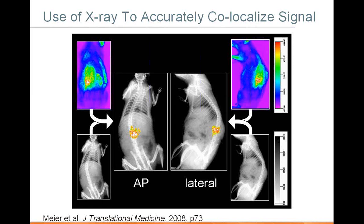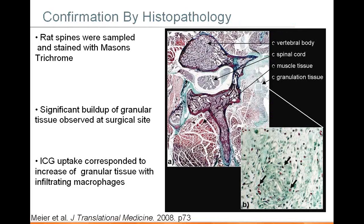Co-registering fluorescence signals with x-ray really helps with landmarking and identifying where your signal is actually coming from. From these images, you can tell that accurately co-registering fluorescence with x-ray signals allows you to see that these signals are coming from the spinal area and even localize approximately to which vertebra the signals are coming from. They then went on to confirm that at these sites of high ICG uptake, there was in fact an increase in local inflammatory cells such as macrophages.